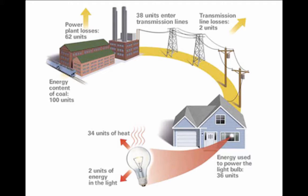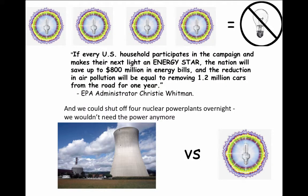So actually changing out light bulbs is a pretty radical move. Compact fluorescent bulbs use one-quarter of the energy of a conventional light bulb. As the EPA administrator said, if every U.S. household buys just one Energy Star light bulb — not changing all 30 bulbs in the house, just one — the nation will save up to $800 million in energy bills, and the reduction in air pollution would be equal to removing 1.2 million cars from the road for one year. We could effectively shut off four nuclear power plants overnight.